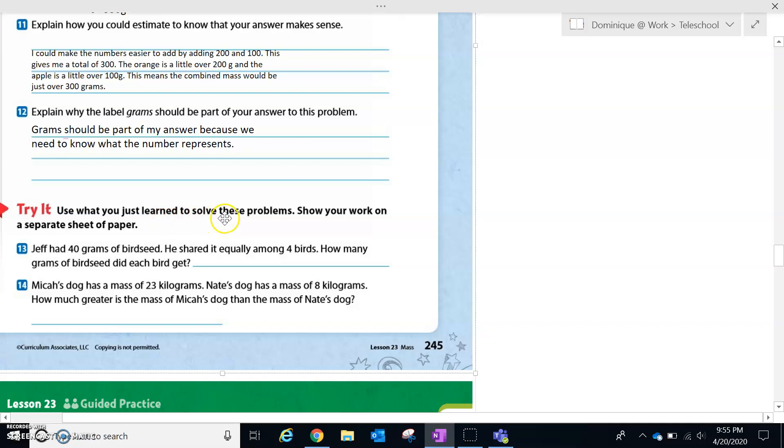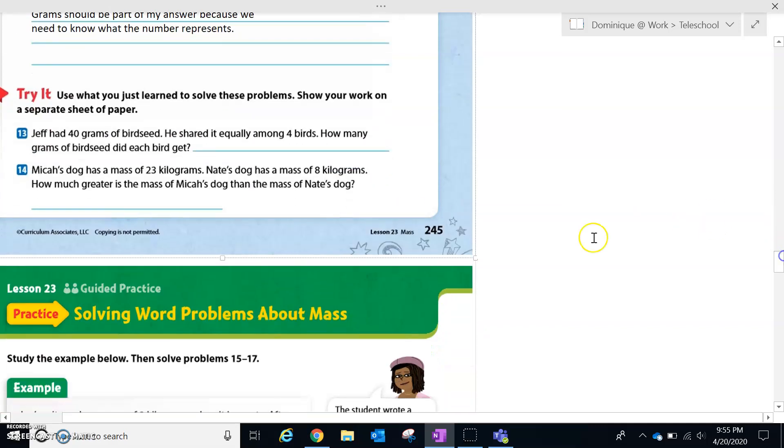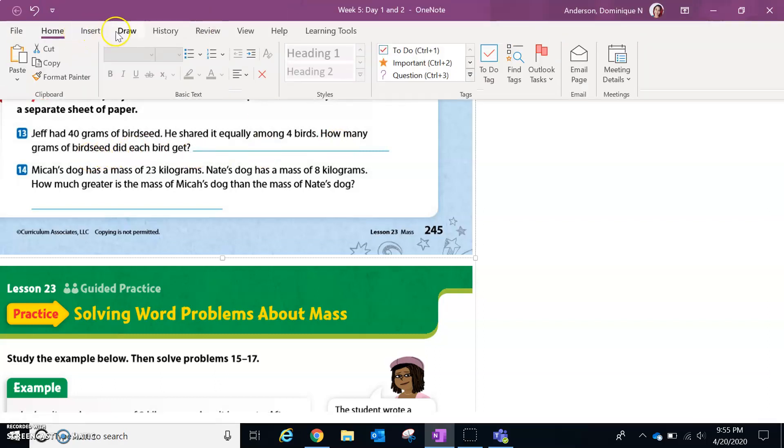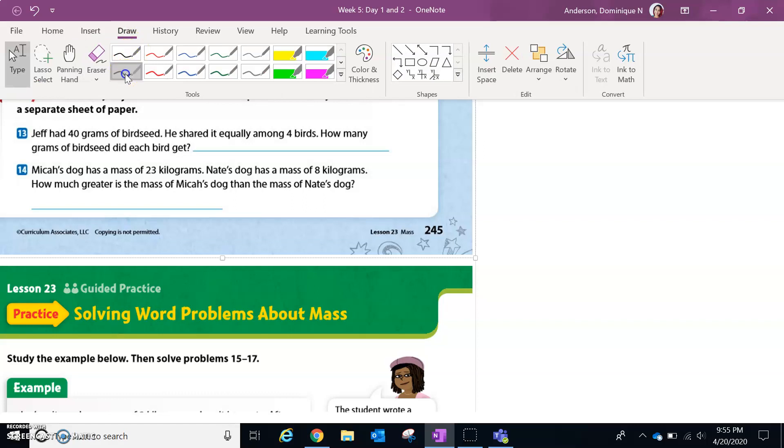All righty. Let's look. It says, use what you just learned to solve these problems. Show your work on a separate sheet of paper. Jeff had 40 grams of bird seed. He shared it equally among four birds. How many grams of bird seed did each bird get? So let's draw this out.